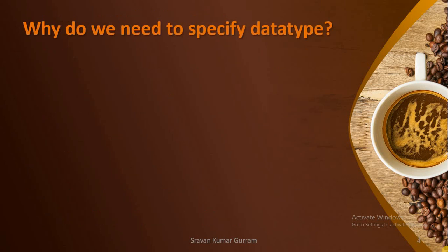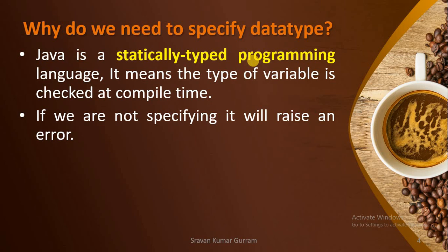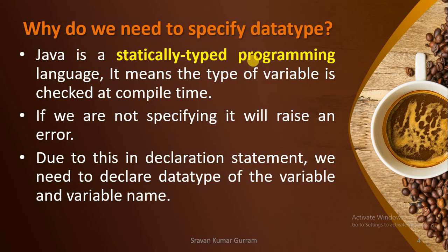Let us start our discussion with why we need to specify data type. What happens if you are not specifying the data type in our program? The major reason is that Java is a statically typed programming language. This means the Java compiler checks the type of the variable at compilation time. Whenever you try to compile your program, the Java compiler checks the data type of every variable. If it is not able to find the data type, it raises an error. Static means compile time — that is the reason you will get a compilation error if you are not specifying the data type. Therefore, in the declaration statement whenever you are declaring a variable, you must declare its data type.